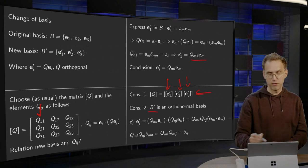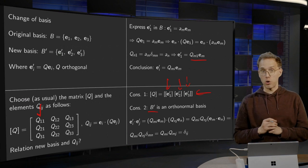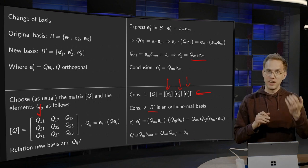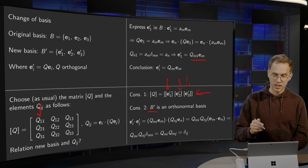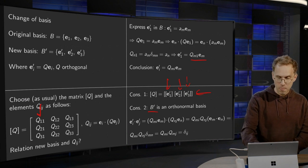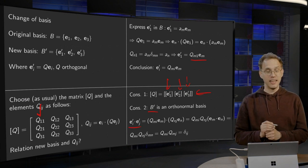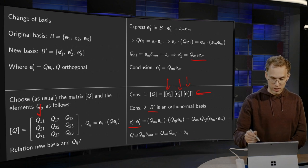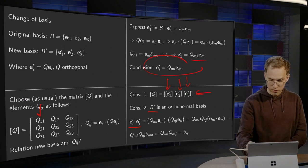A second consequence, quite straightforward. B' is an orthonormal basis. So that's really nice to have orthonormal basis all the time. And you can see this by computing EI'·EJ', we use this formula over here.